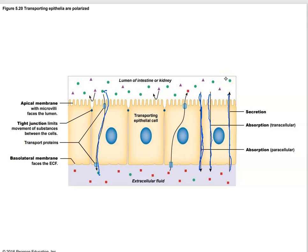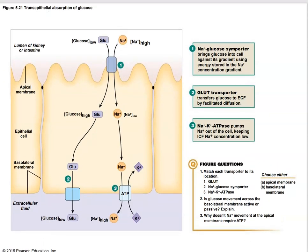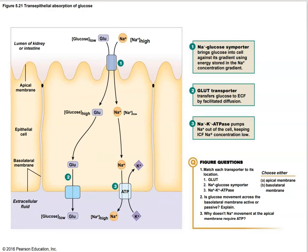We'll talk much more about this in renal physiology and gastrointestinal physiology. In the lumen of the kidney or intestine, you need to reabsorb glucose that was initially filtered out. Here, a glucose-sodium co-transporter sits in the apical membrane and transports glucose across the cell. On the other side, another transport protein handles glucose alone, and a sodium-potassium ATPase exchanges sodium and potassium. The glucose travels all the way across the epithelium and out the other side.